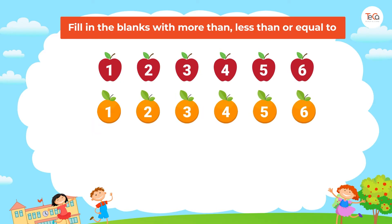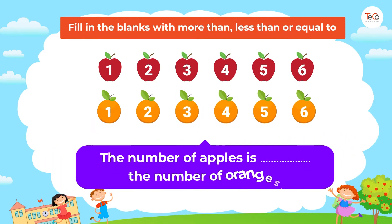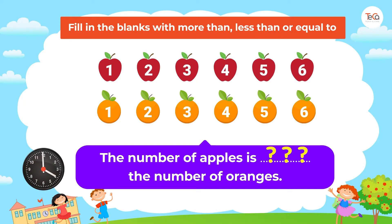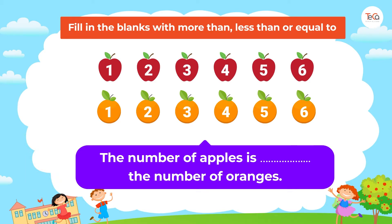The number of apples is ___ the number of oranges. So the number of apples is equal to the number of oranges.